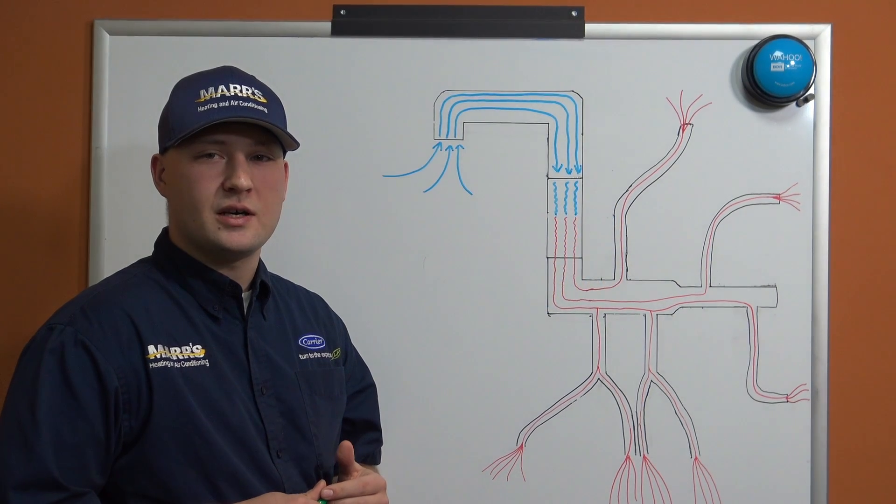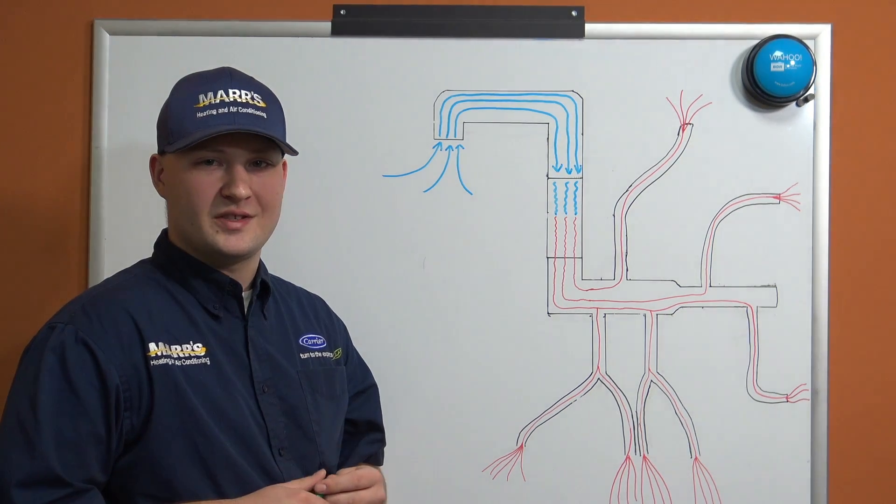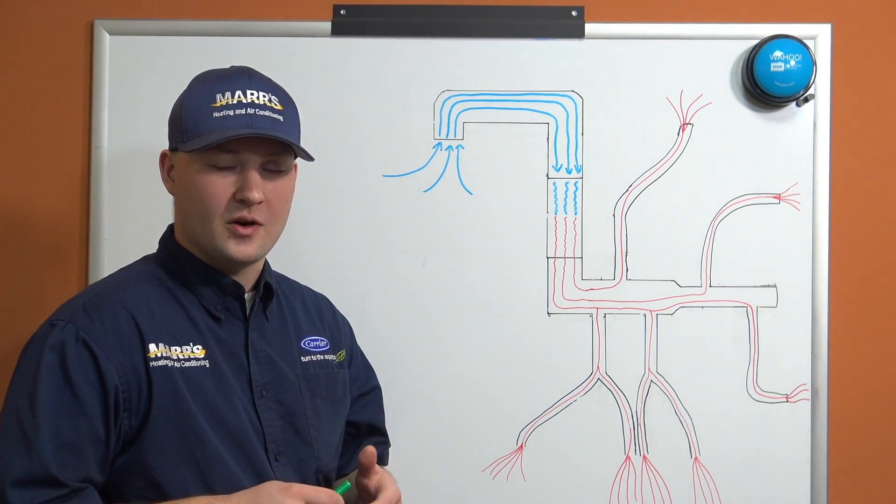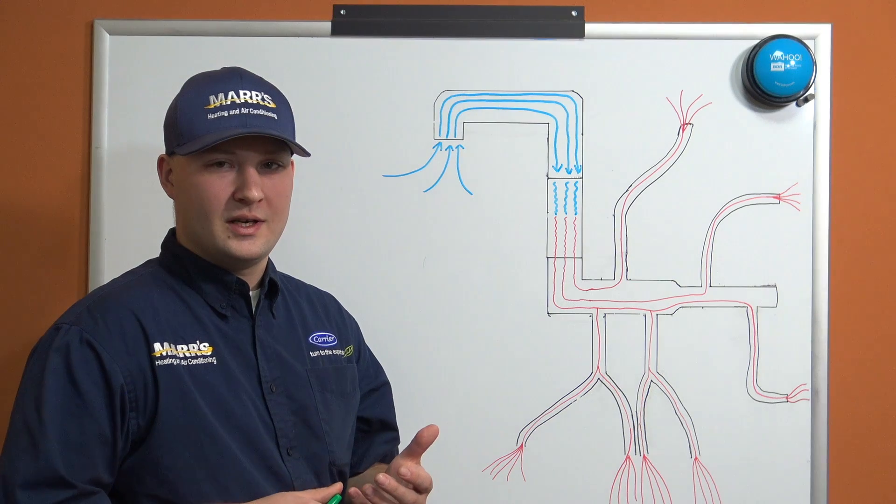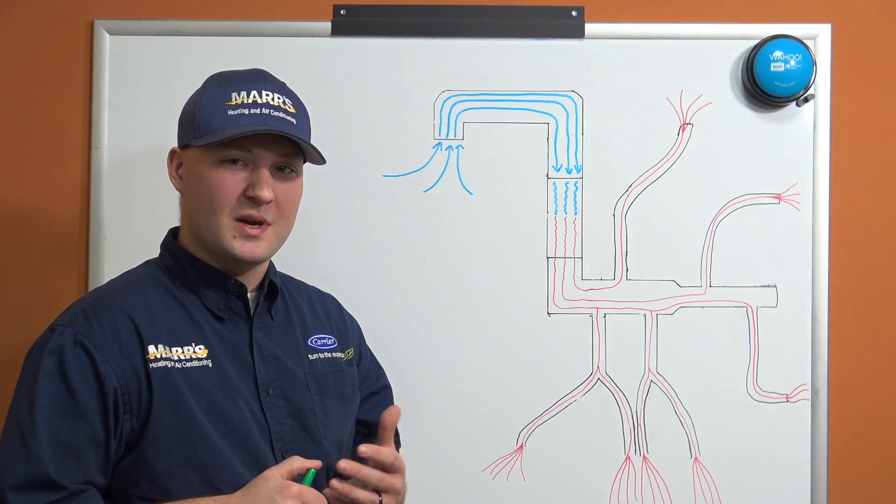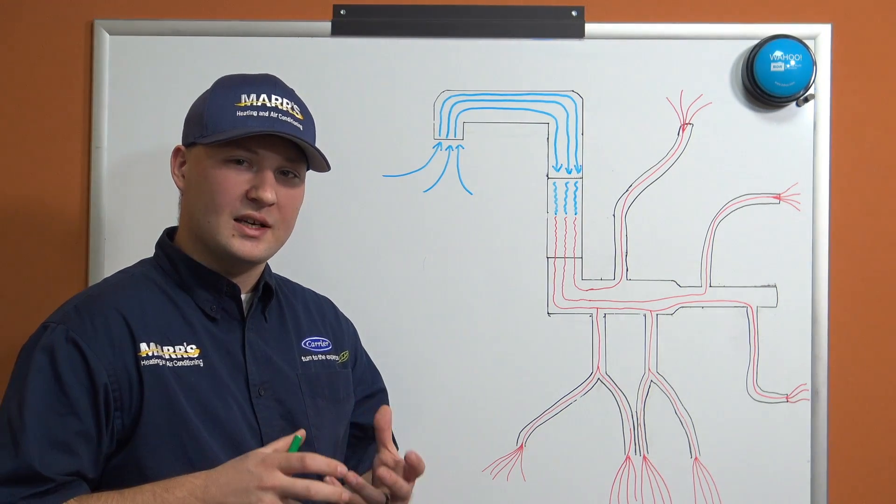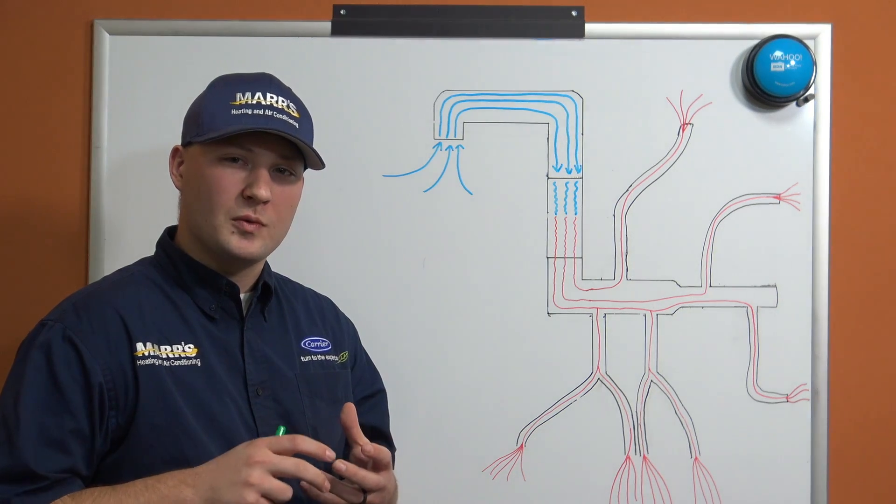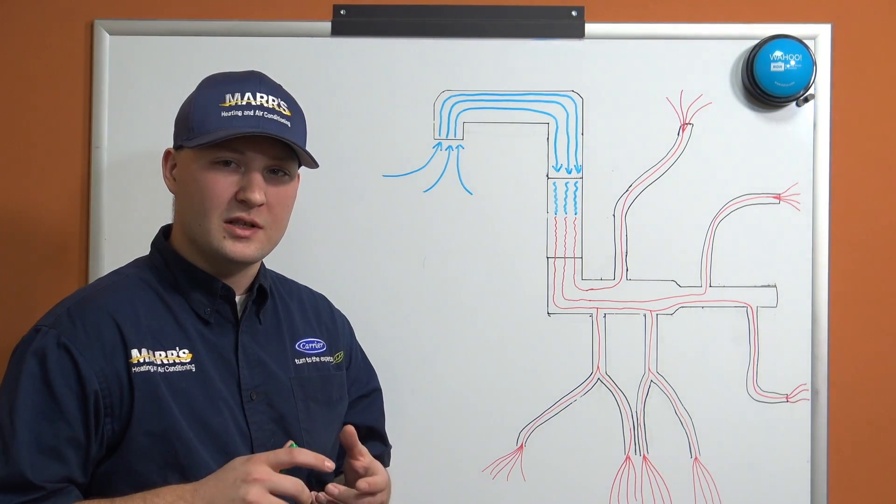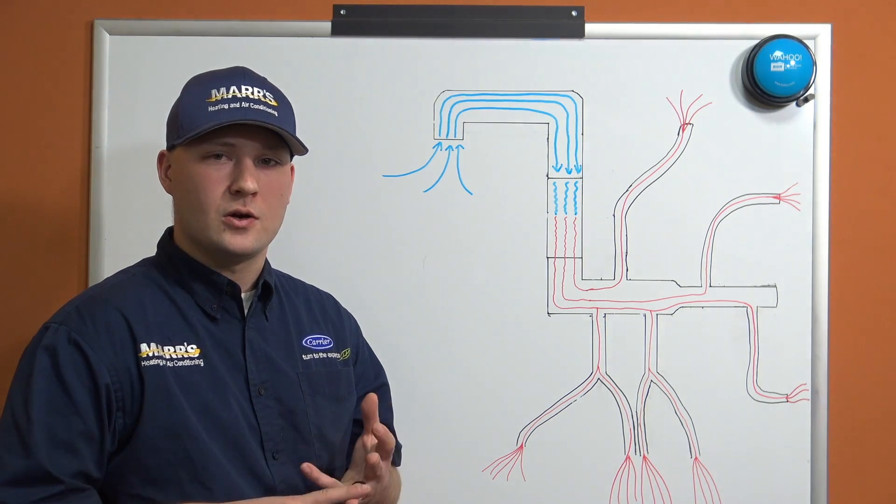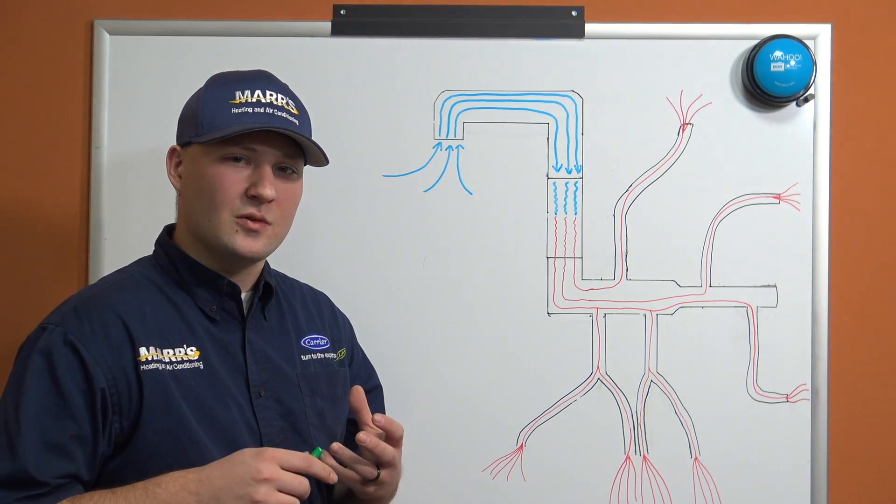Okay, so today we're going to be talking about the blood pressure inside of your duct system, also known as static pressure. Static pressure is something that we measure when we're going out to either diagnose an issue or before we replace an existing system, especially for heat pumps and air conditioners. The biggest thing that we're looking for is how restrictive that ductwork is.